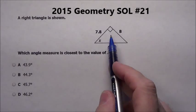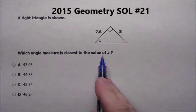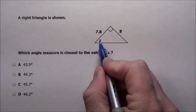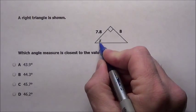Problem 21. A right triangle is shown. Which angle measure is closest to the value of x? We want this angle measurement here. This is across from the 8.